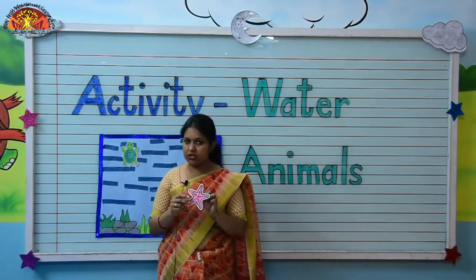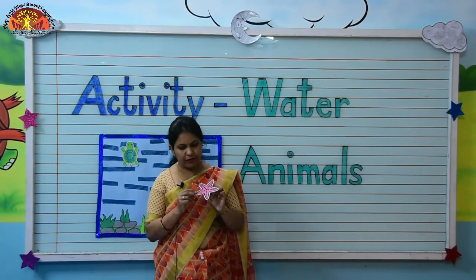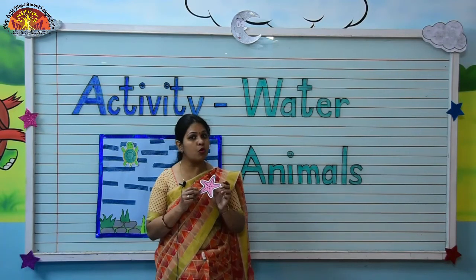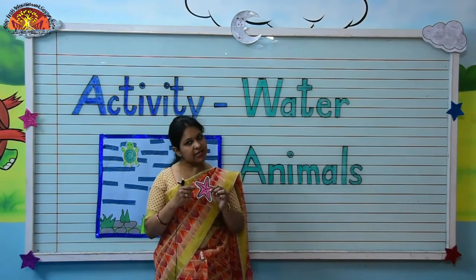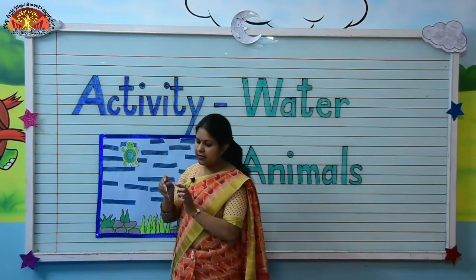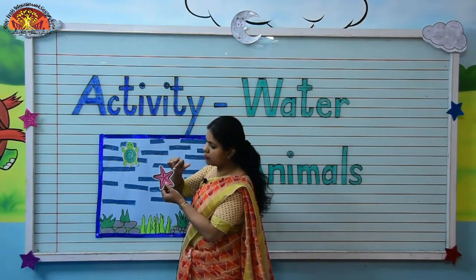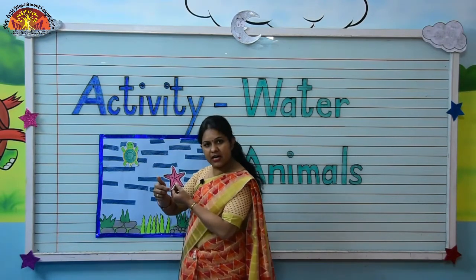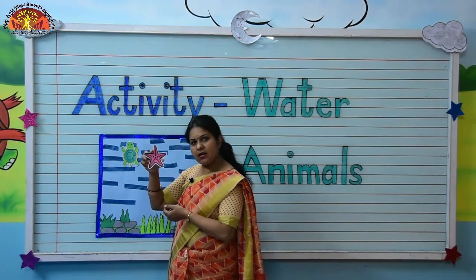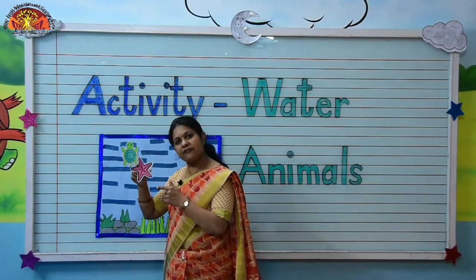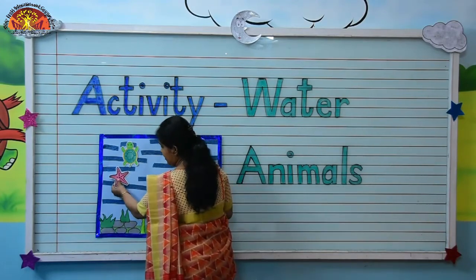Now kids, which water animal is this? Is it an octopus? No, it is a starfish. It has five arms — count with me: one, two, three, four, five. It looks just like a star. So it is a starfish. Very good, kids! We will paste it here.